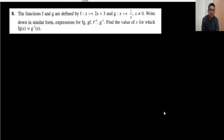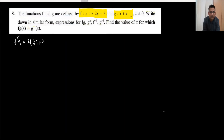Now question number 8. We have functions f and g. We have to write down a similar form expression for fg. fg means we substitute g into f. Here g equals 1 upon x, so f(g(x)) equals 2 times 1 upon x plus 3, which gives 2 upon x plus 3. Taking the LCM with x, this can be written as 2 plus 3x upon x.